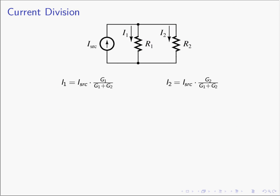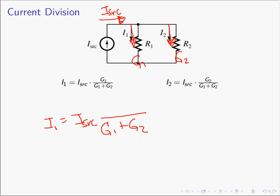To summarize: given a current source being divided between two conductances G1 and G2, I1 equals I source times G1 over (G1 plus G2) — the conductance you're solving for goes in the numerator. I2 equals I source times G2 over (G1 plus G2) — again, the conductance of interest goes in the numerator.